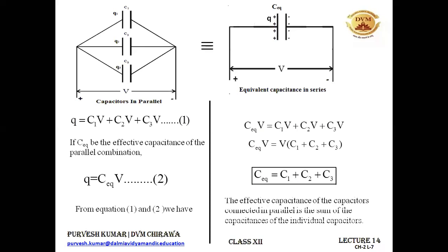So when capacitors are connected in parallel, the equivalent capacitance is simply the sum of the individual capacitances. Note that the formulas are interchanged compared to resistors: the series capacitor formula matches the parallel resistor formula, and vice versa. That's all about the combination of capacitors.